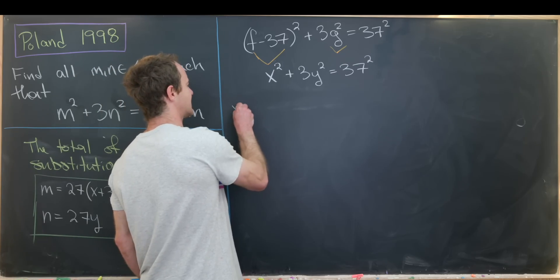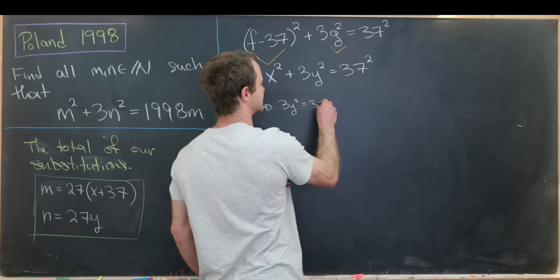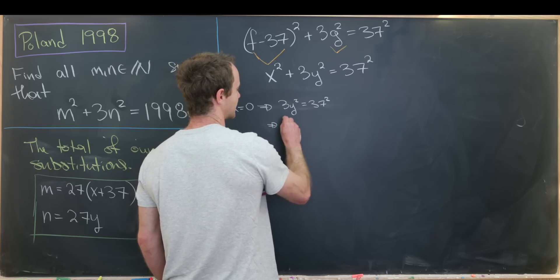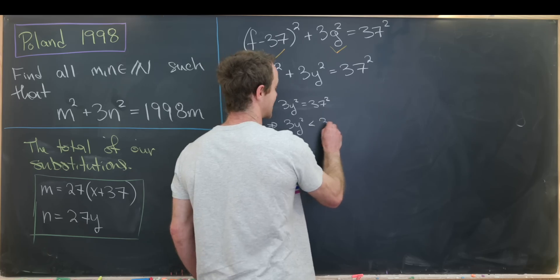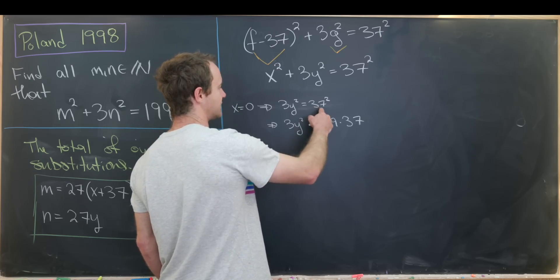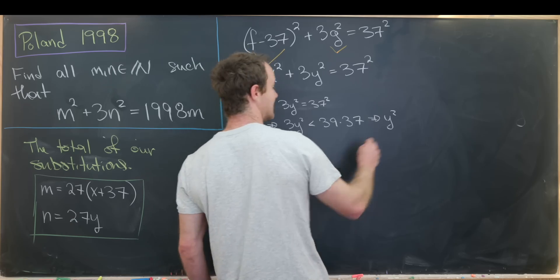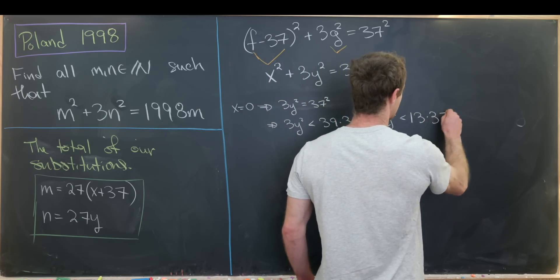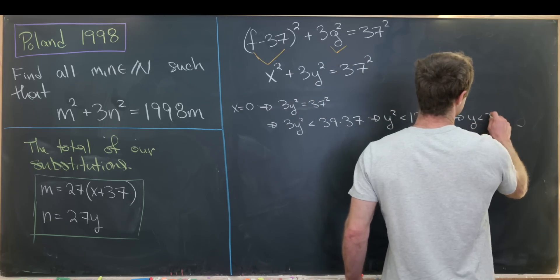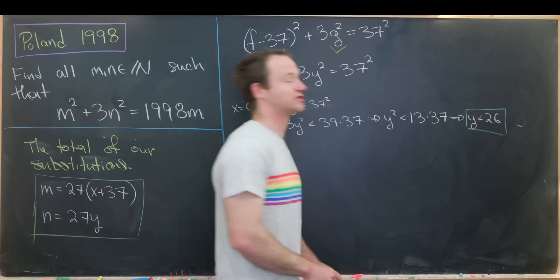And then from there we can play like an estimation game to guess and check this very quickly. So let's notice that if x is equal to zero, that means we would have 3y squared is equal to 37 squared. But let's notice that means that 3y squared is less than 39 times 37. But that tells us that y squared is less than 13 times 37. But then you'll see that that means that y has to be less than 26. So that really tells you you don't have to check so many.